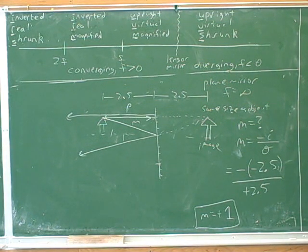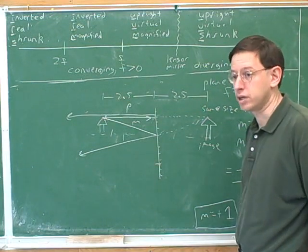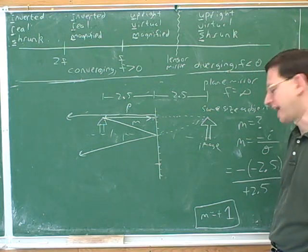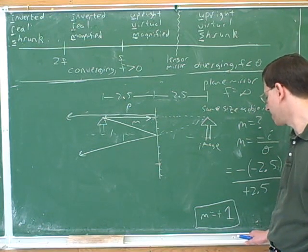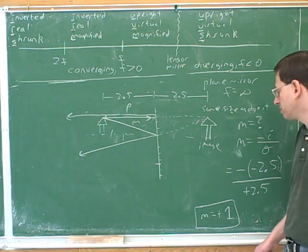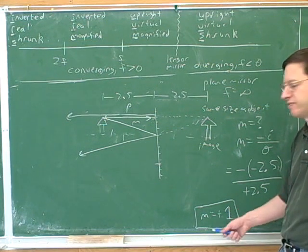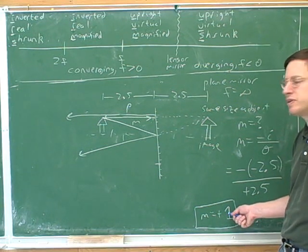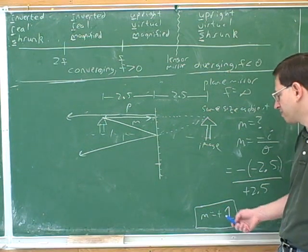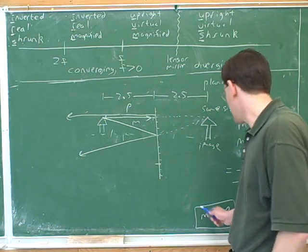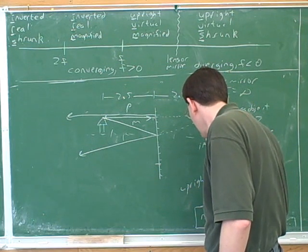So what are the two different things we could figure out if we're told that M is positive 1? That it's an upright image and that there's no magnification — or a magnification of 1 — which means the image is the same size as the object. How do we know it's upright? Because it's positive — positive means upright. And if the magnitude of M was bigger than 1, the image would be bigger than the object; if smaller than 1, the image would be smaller than the object. So M equal to 1 means the same size. This is upright and same size.